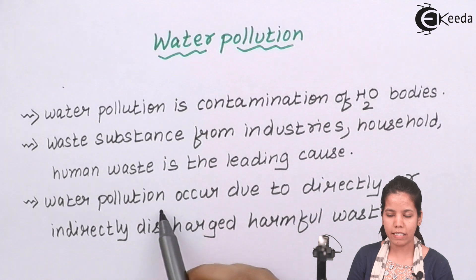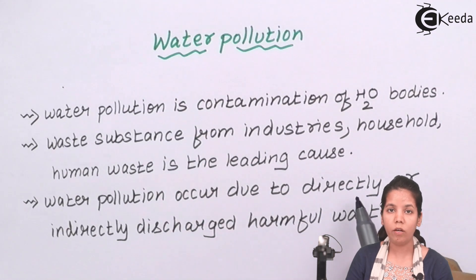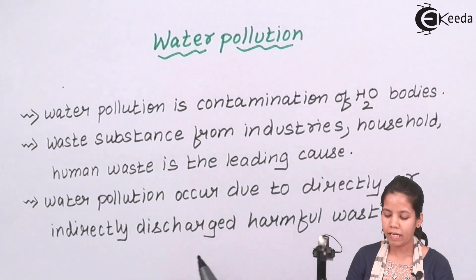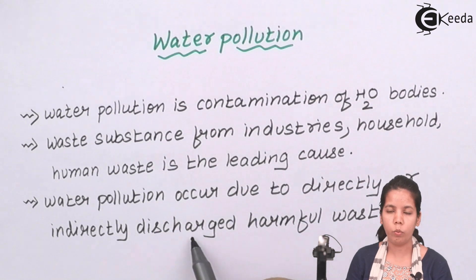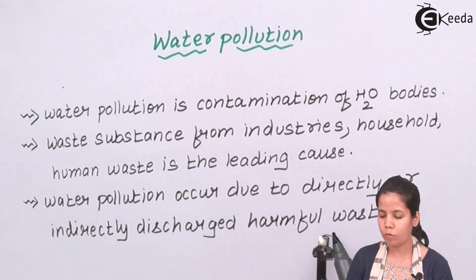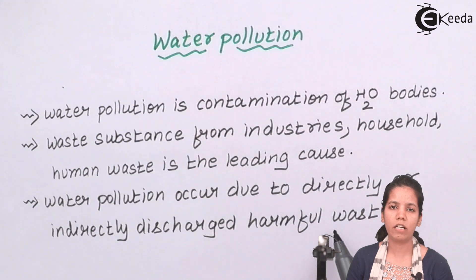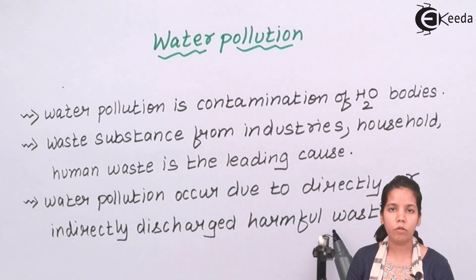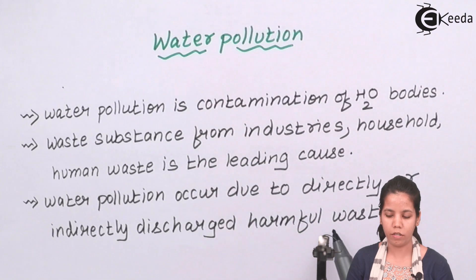Water pollution basically occurs either directly — when we dump our household waste directly into the water body — or indirectly, through the discharge of harmful waste. When I say indirectly, it means industrial waste which should be treated before discharge, but instead is discharged untreated directly into water bodies.